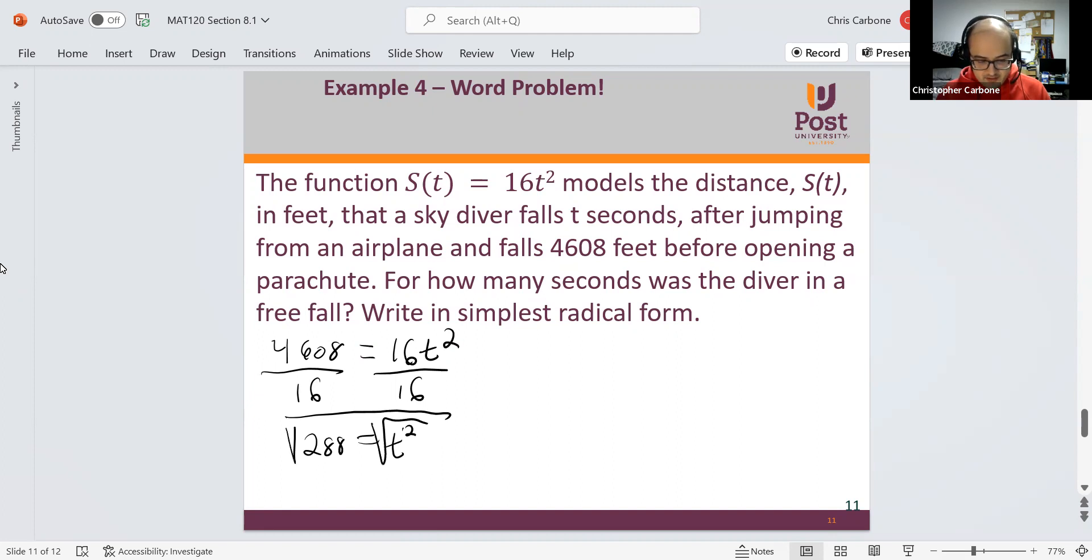Taking the square root of both sides gives us t equals, again, negative seconds makes no sense. So we're just going to take the positive version of this. So this equals the square root of 288. As a decimal, that's about 16.97 seconds.